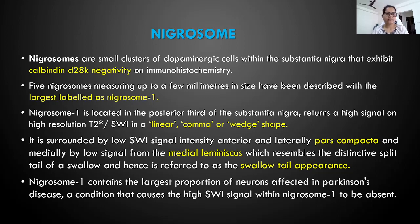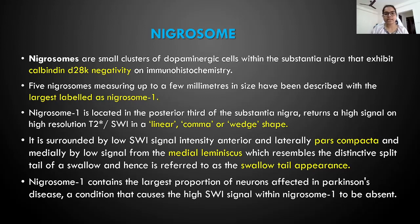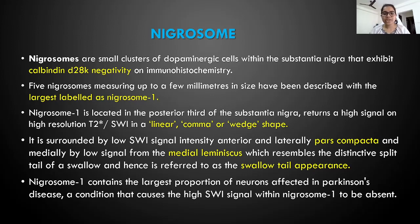Coming to the nigrosome, it is a small cluster of dopaminergic cells within the substantia nigra that exhibit calbindin D28K negativity on histochemistry and immunohistochemistry. Five nigrosomes measure up to 5 mm in size, with the largest labeled as nigrosome 1. It is located in the posterior third of the substantia nigra and returns a high signal on high-resolution T2* or SWI in a linear comma or drop shape. It is surrounded by low SWI signal intensity anteriorly and laterally by pars compacta, and medially by a low signal from the medial lemniscus.